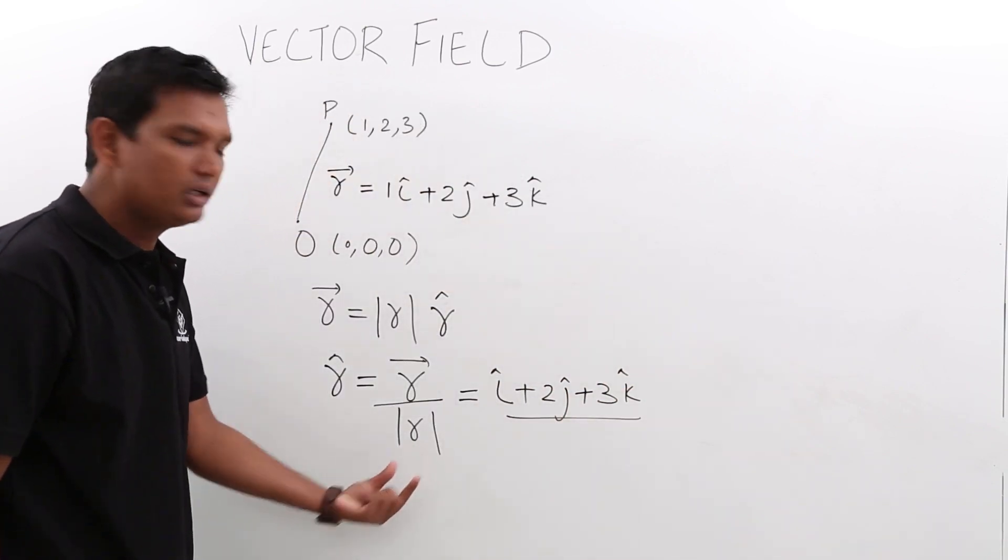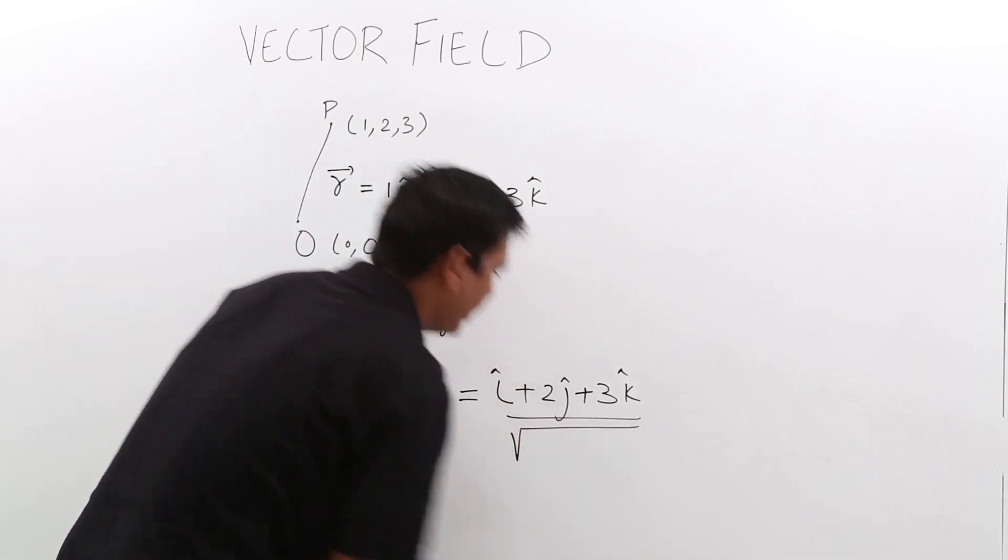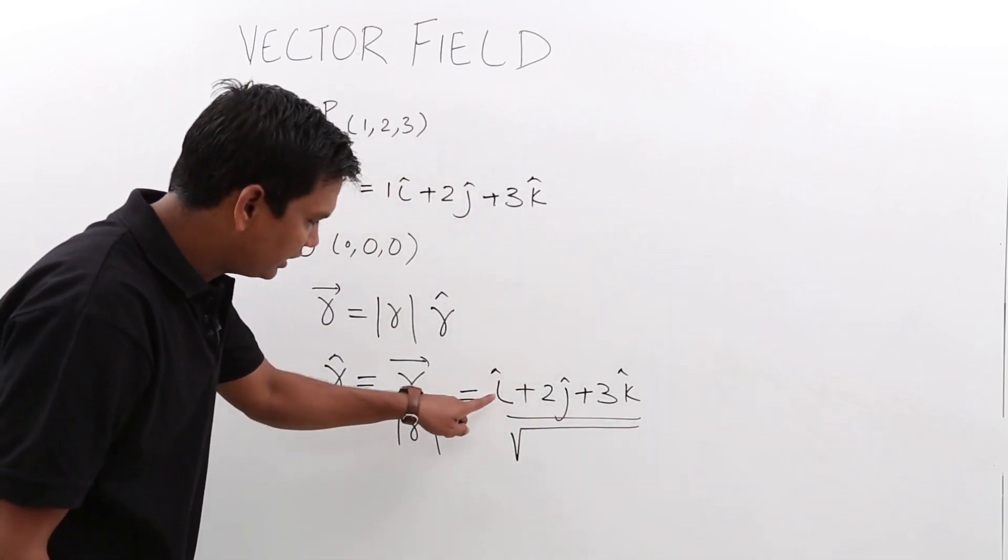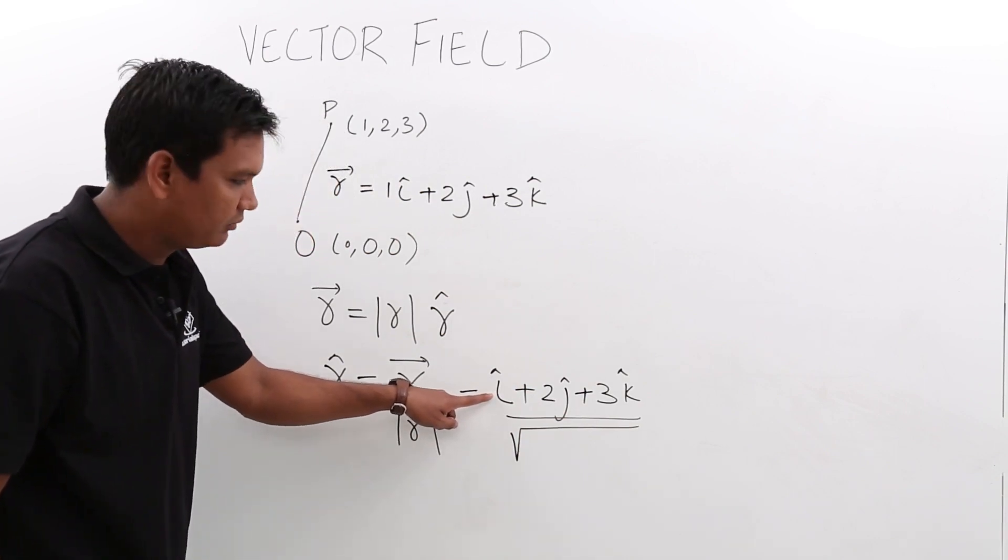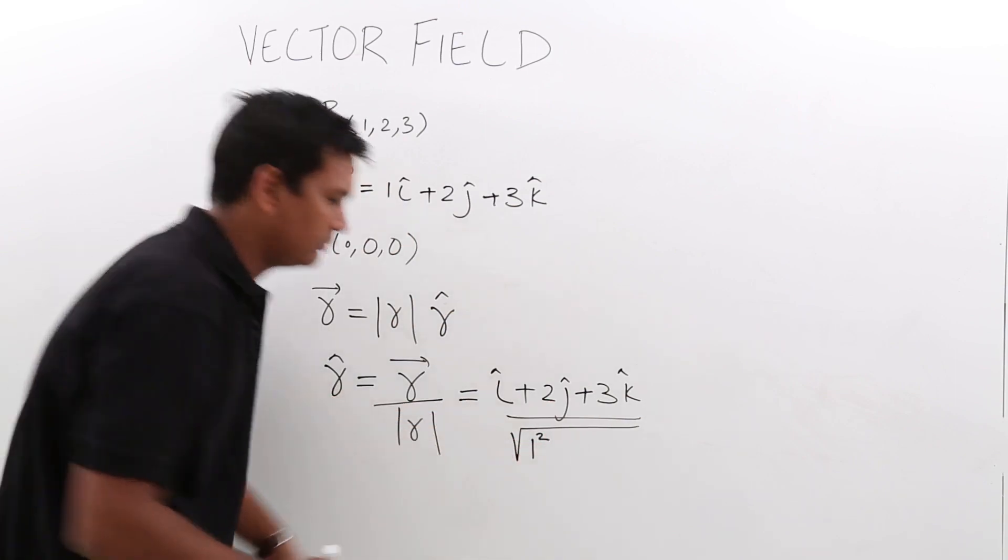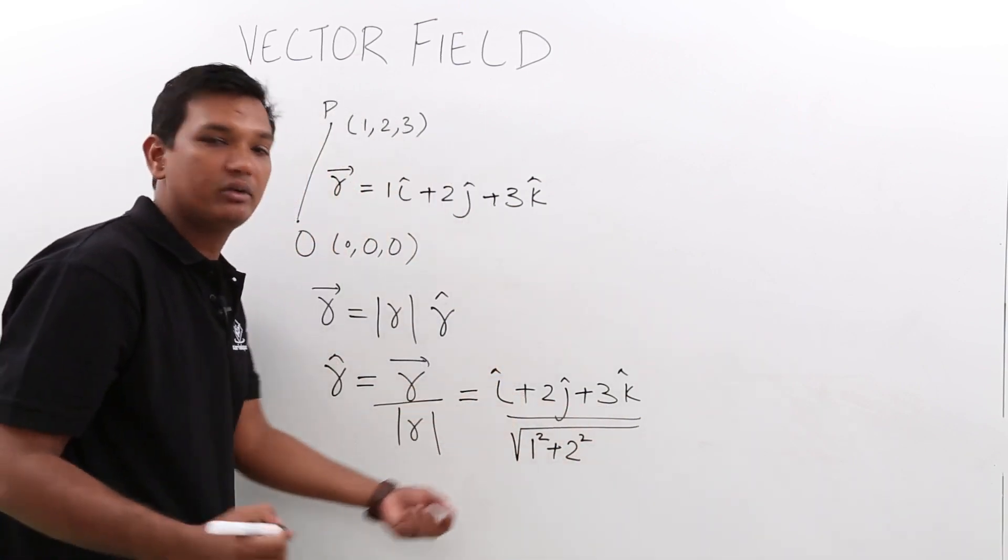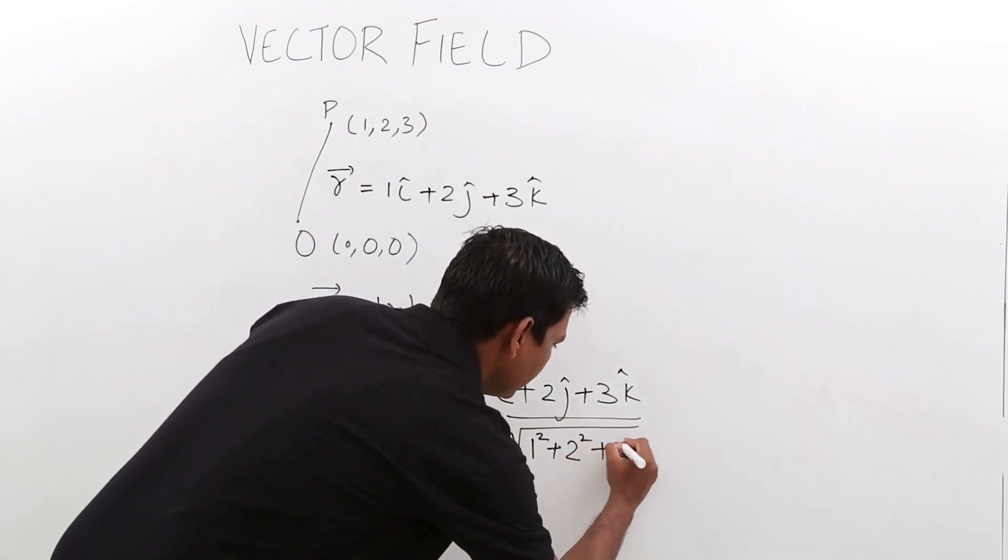What would be the magnitude of r? It will be the square root of 1 squared plus 2 squared plus 3 squared.